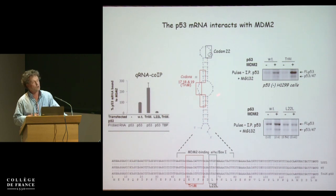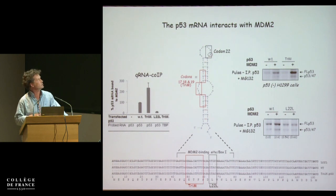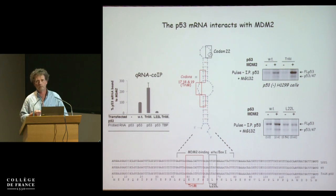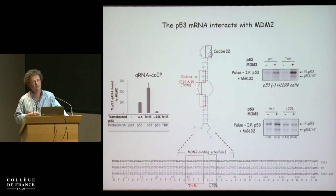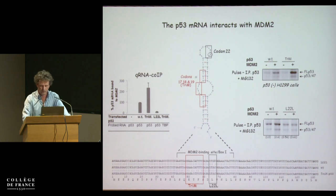MDM2 binds not only the amino acid encoded by this region but also the RNA itself. So from the same genomic sequence of p53, you have two MDM2 interaction sites: one peptide and one RNA. If we introduce silent mutations at codons 17, 18, 19 — the triple mutant — without changing the encoded sequence, we get an mRNA that binds better to MDM2. But a silent mutation found in a cancer sample at codon 22 (L22L) loses binding to MDM2. The affinity of the p53 mRNA to MDM2 controls the rate of p53 synthesis.